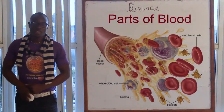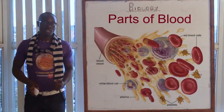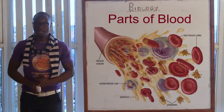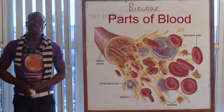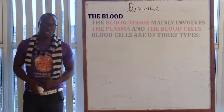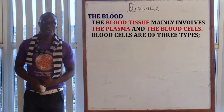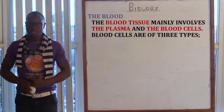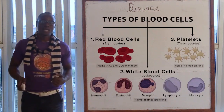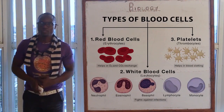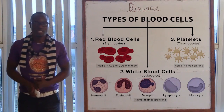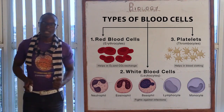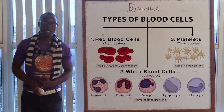Welcome to this class, whereby we are going to discuss about the blood. The blood tissue consists of plasma and the blood cells. The blood cells that we have are the white blood cells, the red blood cells, and finally we have the platelets.